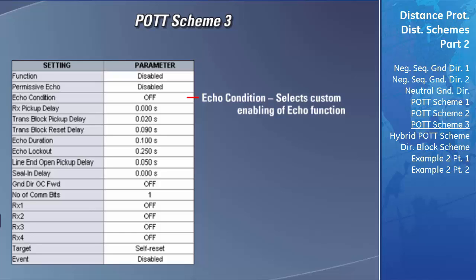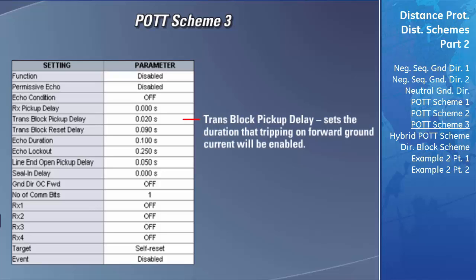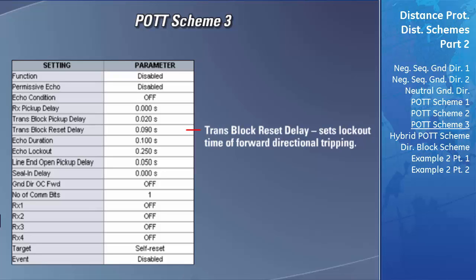The RX pickup delay field is used the same way as described in the POTT scheme section. The transient block pickup delay sets the time period after receiving the POTT key during which the local D60 detecting forward ground current will be allowed to trip the breaker. If this delay expires before the local relay detects ground current, the POTT will not signal the breaker to trip. The transient block reset delay will lock out the ability to trip on forward ground current once the POTT key has been removed. Once this timer expires, any new POTT keys will allow tripping of the D60 on forward directional ground current.